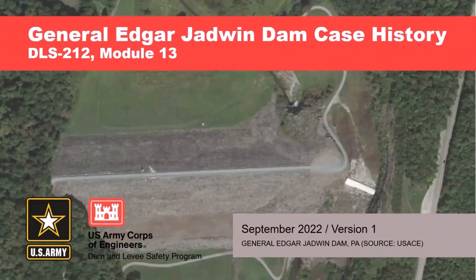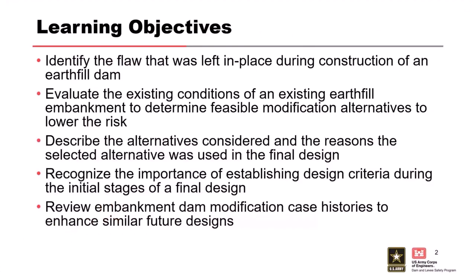I have a short presentation, a very short case history. I mentioned this one before — Jadwin Dam, it's a core facility. The objectives of this presentation: there was a flaw that was left in this embankment during construction, so we're going to go through that. We're going to look at the existing conditions of the embankment, how we came up with feasible modifications, and why we selected the one that we did.